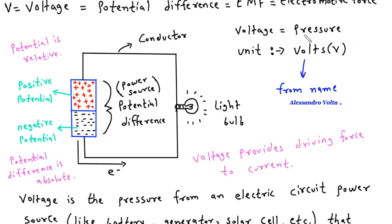Voltage is the pressure which pushes electrons. The drift of electrons is electric current. Voltage provides the driving force to current.